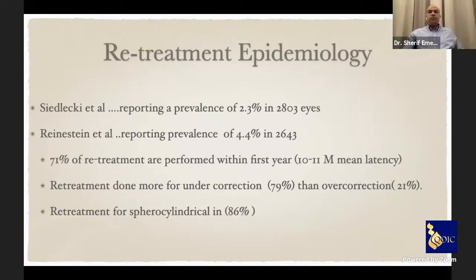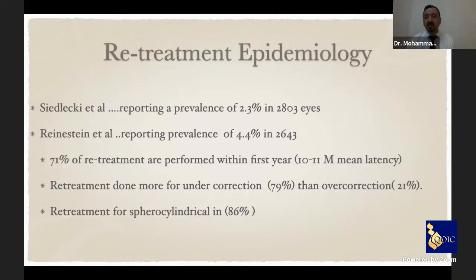We need to wait at least six months — possibly up to ten months — before deciding to intervene. Retreatment was performed more for undercorrection than overcorrection, meaning refractive surgeons tend to undercorrect. Retreatment was for spherocylinder in 86% of cases.